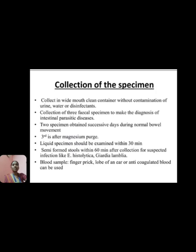The collection of the specimen. The sample is collected in a wide-mouth clean container without contamination of urine, water, or disinfectant. Three fecal specimens are taken for the diagnosis of intestinal parasitic disease. Two specimens are obtained on successive days during normal bowel movement, and the third is after a magnesium purge.